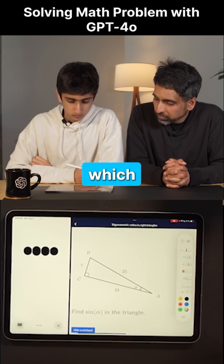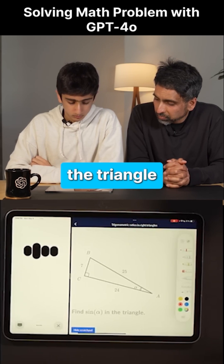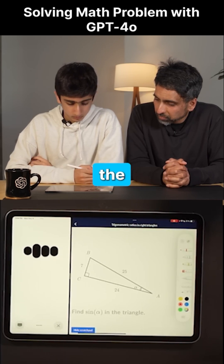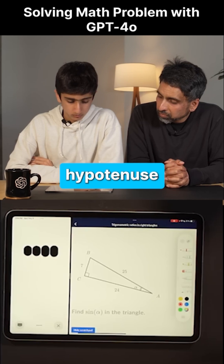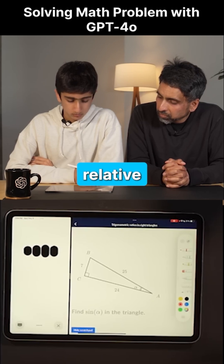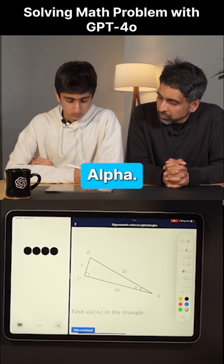Identify which sides of the triangle are the opposite, adjacent, and hypotenuse relative to angle alpha.